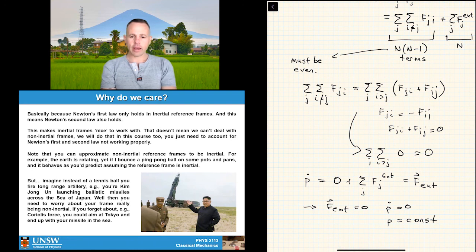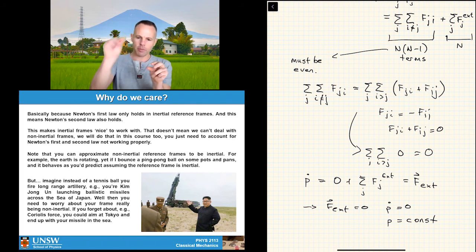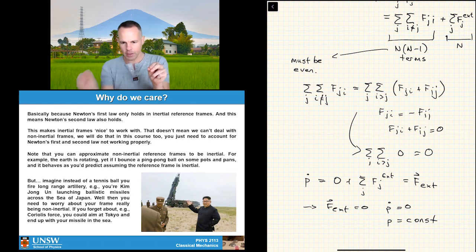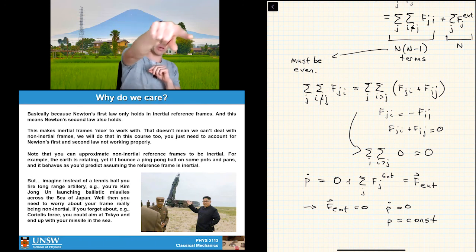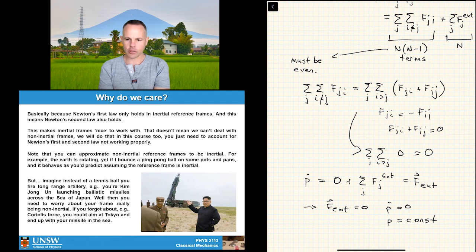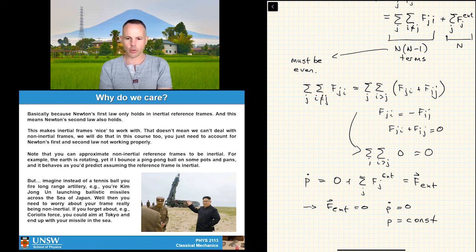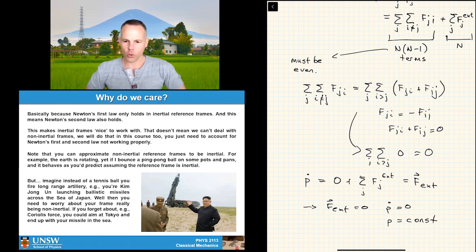One case where the Earth's non-inertiality matters is when firing a projectile several thousand kilometers through the atmosphere. If you're launching ballistic missiles across the Sea of Japan and treat the Earth as an inertial frame, your errors become large enough that you might hit Tokyo instead of your intended target — which would not be a good outcome. I also just noticed that Kim Jong-un and I probably have the same hairdresser.